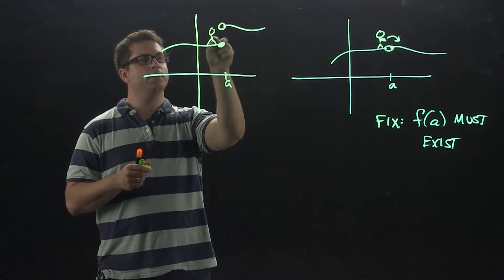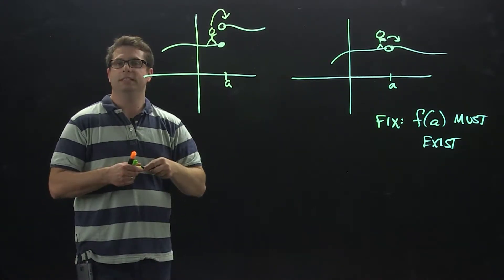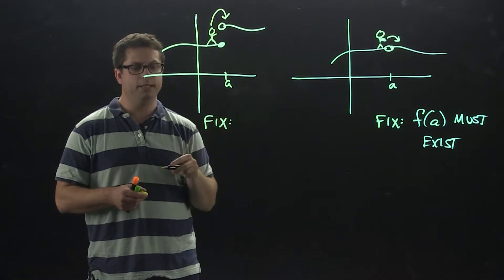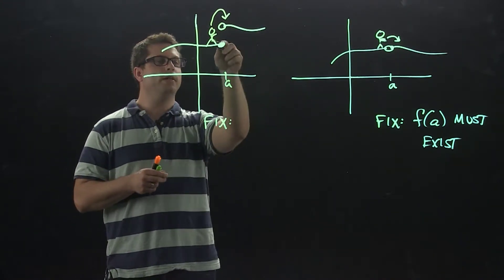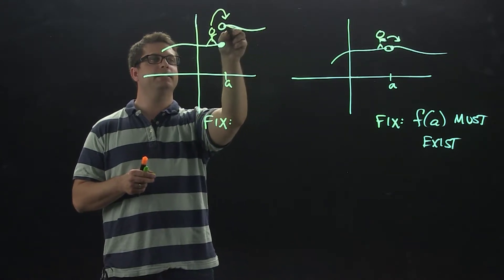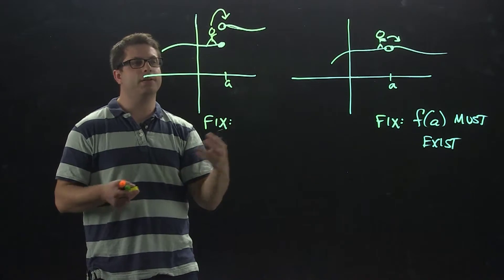You are going to have to somehow jump up to get to the graph on the other side. Not continuous. What would the fix be in order to be continuous? Well, the limit from the left-hand side and the limit from the right-hand side have to be the same. Otherwise, you're going to have a jump discontinuity.